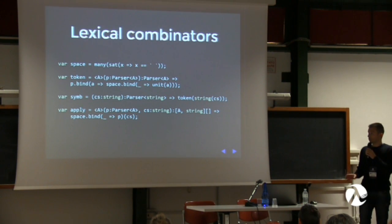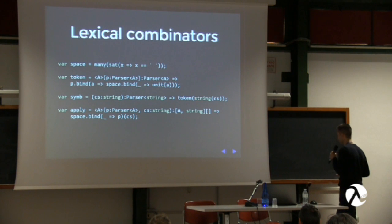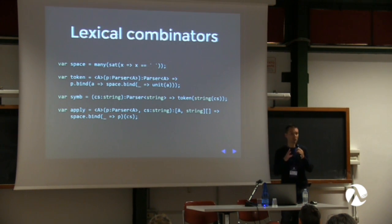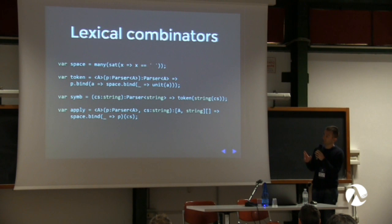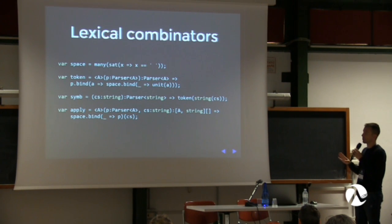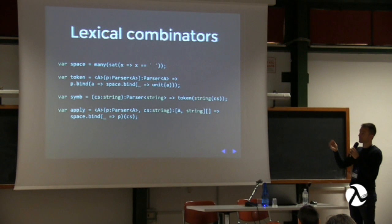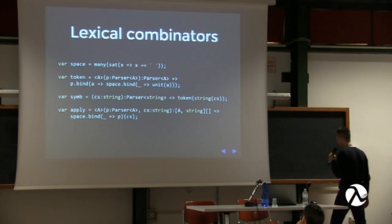The parsers seen so far, with some extensions, allow us to parse arbitrarily complex grammars. We can create lexical combinators: a space combinator that parses as many spaces as given; a token combinator that ignores trailing spaces; a symbol combinator that parses any token matching a given string; and an apply combinator that discards any leading spaces and applies parser P to the input string.